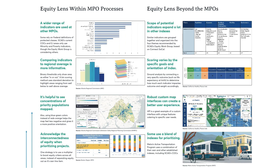Moving beyond the MPO, the scope of indicators expanded a lot in other indexes. The scoring varies by the specific goals and orientation of the index, but in many cases robust custom map interfaces can create a better user experience. And some organizations use a blend of indexes when prioritizing their projects.